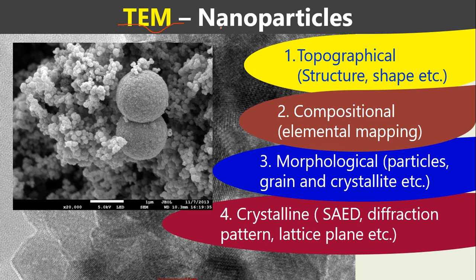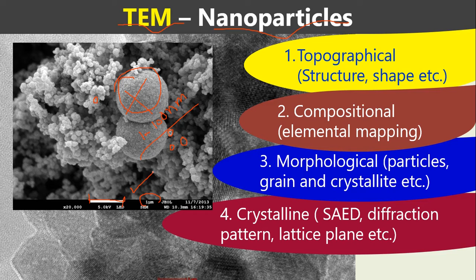These are images of nanoparticles. The big one cannot be called a nanoparticle because it is not in the nanoscale. As explained, at least one dimension of a sample needs to be in the range of 1 to 100 nanometers to be called a nanomaterial. There are also some hollow nanoparticles visible here. The scale bar is in microns, and these small particles are in the nanoscale.